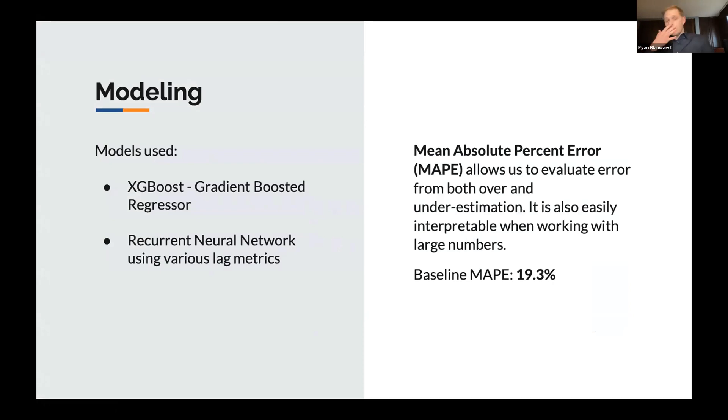As far as predicting, I'm going to be using two basic model types. The first is a gradient boosted regressor, and the second is a recurrent neural network. To evaluate how well these are doing, I'm going to be using something called mean absolute percent error, or MAPE. Just so that we have some sort of baseline measurement, when we predict based on the mean electricity usage, that MAPE score hovers around 19%.